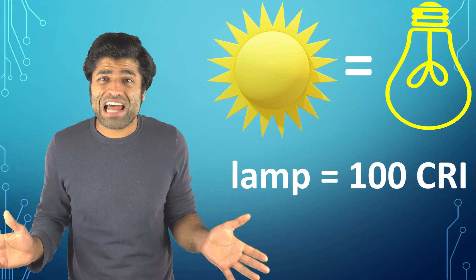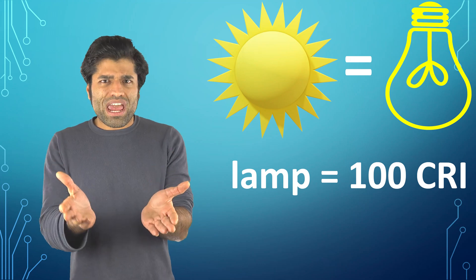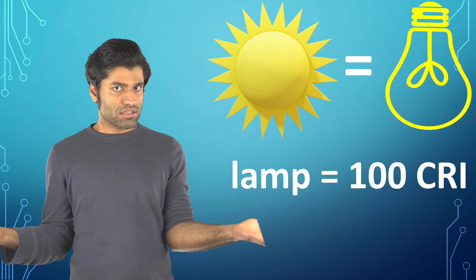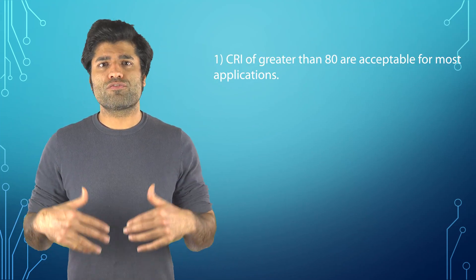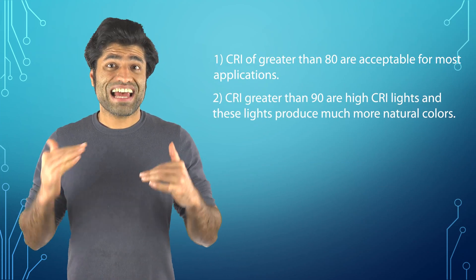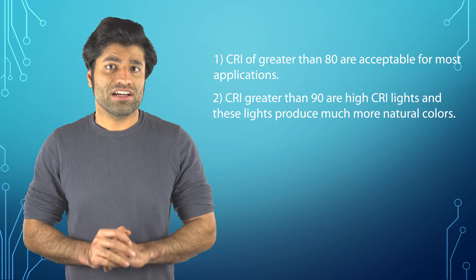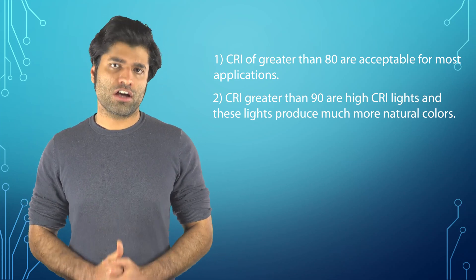Obviously, there is no lamp that could show the colors of an object in the same way as under sunlight. Therefore, CRI of artificial light sources are classified as follows: CRI greater than 80 is acceptable for most applications, and CRI greater than 90 is considered high CRI, meaning these lights produce more natural colors.